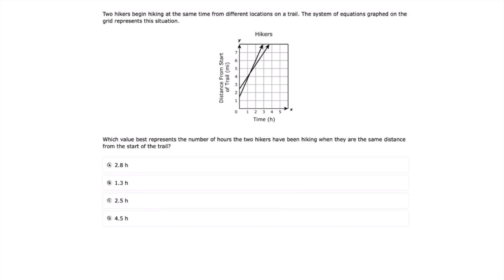And whenever we have a system of equations on a graph, all we have to do is find where those two lines intersect. So that means that right here is where those two lines intersect.